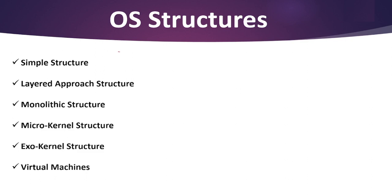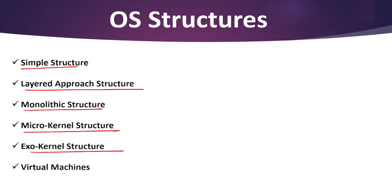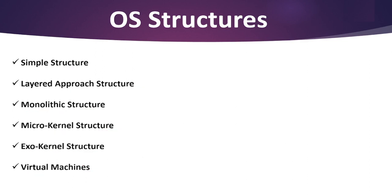Now let's move to the types. Here we basically have six types: first is simple structure, layered approach structure, monolithic structure, microkernel structure, exokernel structure, and virtual machines. Virtual machines are also a very important topic.